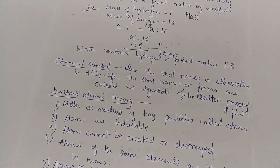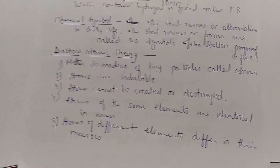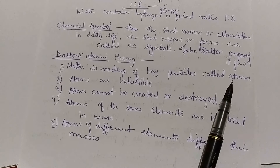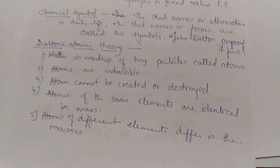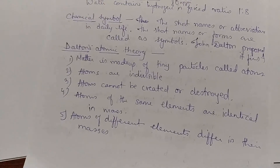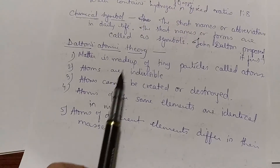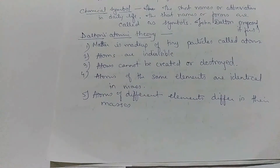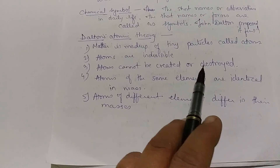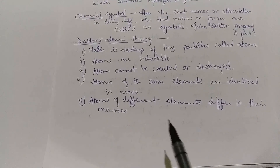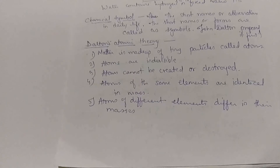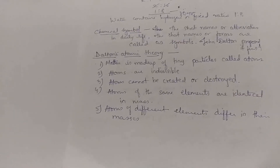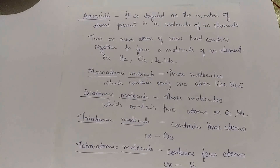John Dalton proposed his atomic theory with key postulates: matter is made up of tiny particles called atoms; atoms are indivisible and cannot be divided further; atoms cannot be created nor destroyed but change from one form to another; and atoms of the same element are identical in their properties, while atoms of different elements differ in their properties.